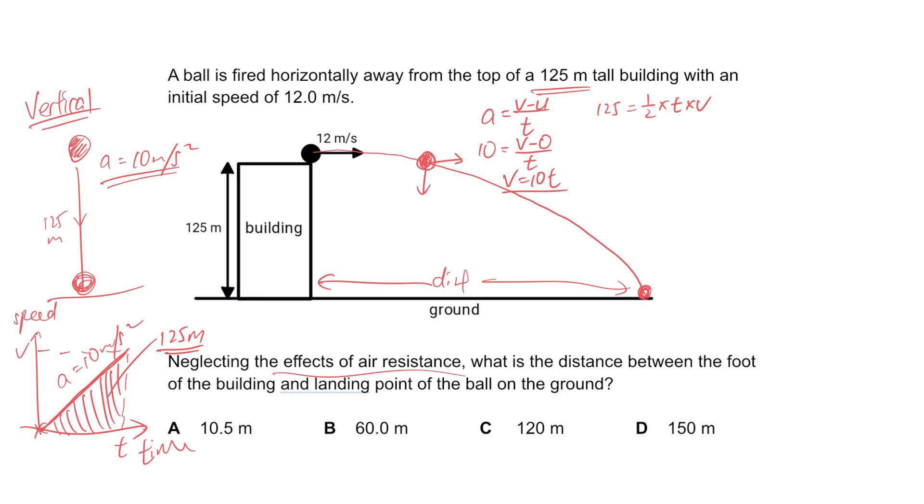Substituting v into this equation and simplifying, you find that t² = 25, so t = 5 seconds. It will take 5 seconds to hit the ground.